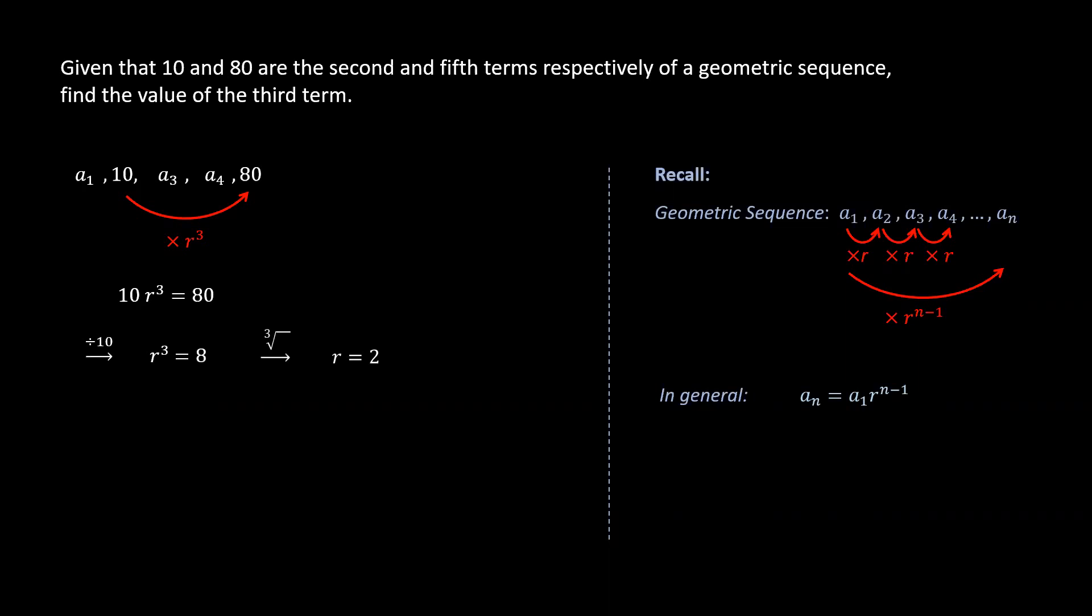So the common ratio of this sequence is equal to 2. Finally, to find term 3 or the third term, we need to multiply the second term by one common ratio. A3 equals 10 multiplied by 2. So the third term will be 20.